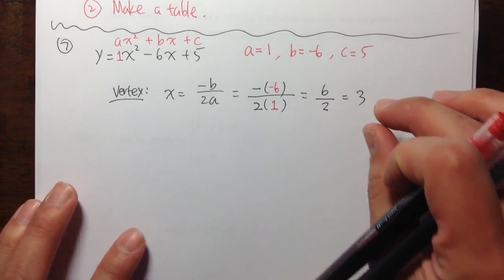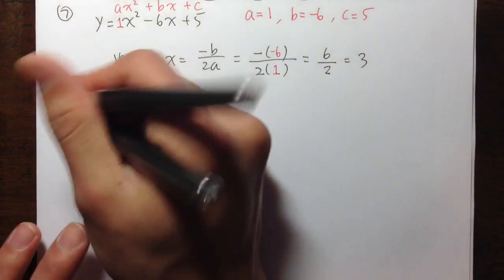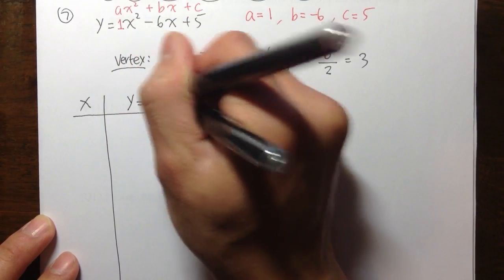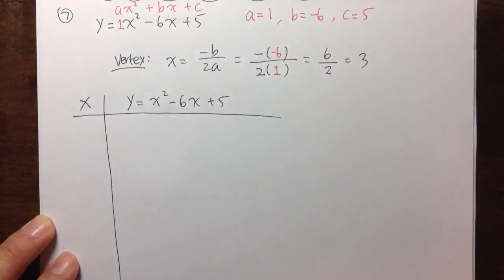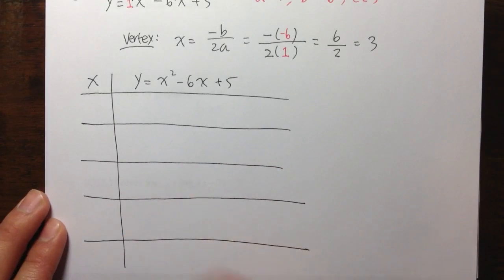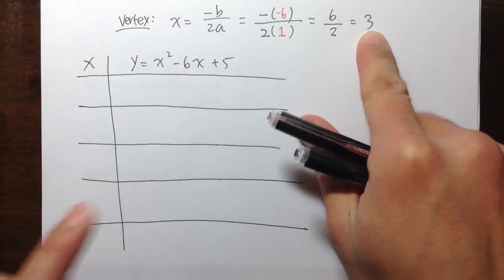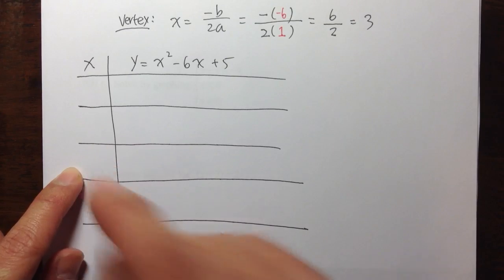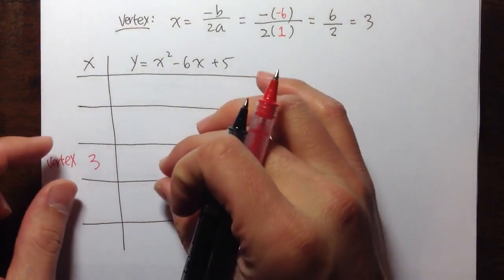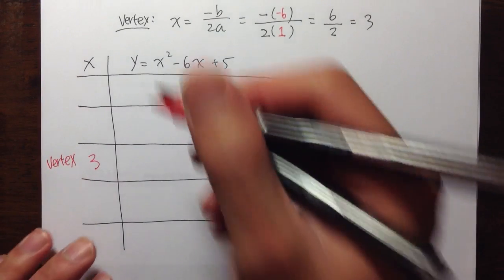So the x value of the vertex is 3. We need to find the y value. I'm making a table with x values and y values. The vertex is going to be in the middle — that's why we put it in the middle. The vertex is either the highest or lowest point of the parabola. So x is equal to 3, and we just need to plug in to this equation.